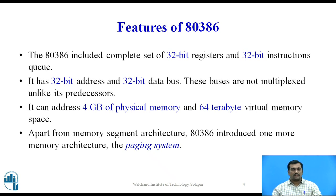Since it has a 32-bit address bus, it can address 2 raised to 32, i.e. 4 GB of physical memory and 64 TB of virtual memory space. Apart from memory segment architecture, the 80386 microprocessor introduced one more memory architecture, namely the paging system.